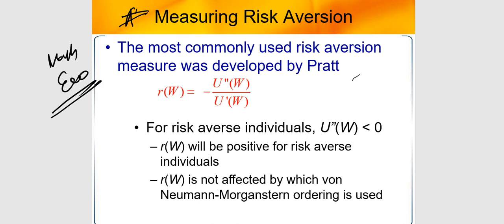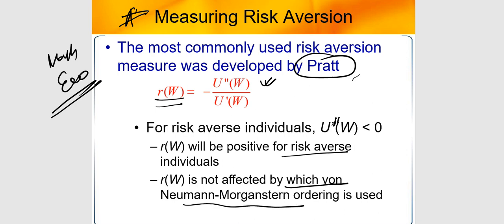The most commonly used risk aversion technique is the Pratt measure. You take the utility function u, compute the second derivative u-double-dash, divide it by the first derivative u-single-dash, and put a minus sign. For a risk-averse individual, u-double-dash of w is less than zero, so r(w) will be positive. r(w) is the absolute risk aversion, ARA.